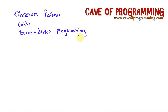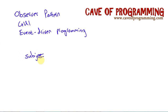The idea is that in some kinds of programs we have objects which, in the terminology of the observer pattern, we call the subject. Because this is such a tricky idea, I'm going to divide this into three tutorials. In this tutorial we're just going to look at the theory.